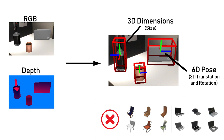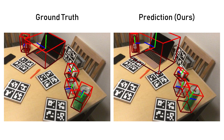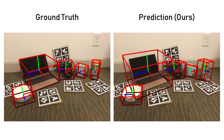We first show some results from our method. Objects like bottles have a vertical axis of symmetry, which our method is capable of handling.